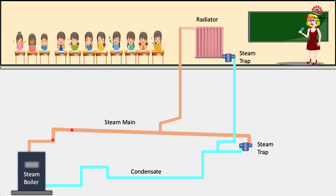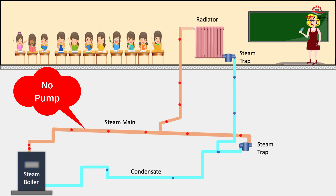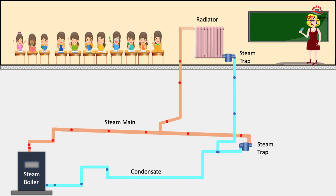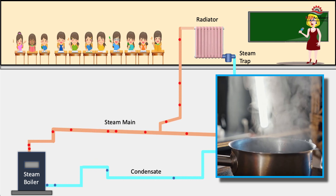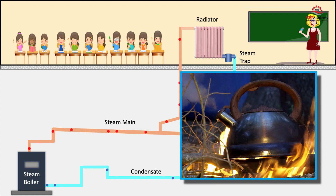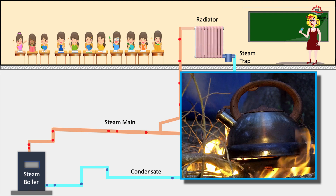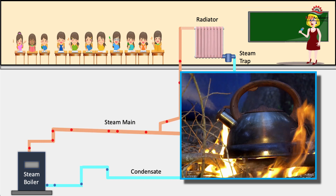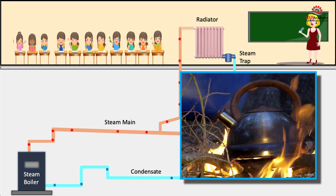Steam is moved through the system of pipes by the pressure created when water is vaporized into steam. There are no pumps required, as the higher pressure within a steam system causes it to move through the pipes, valves, and equipment. We can witness this on any stove top when boiling water or when a tea kettle whistles — as the water turns to steam, it seeks to escape through the small opening and whistles as it escapes.